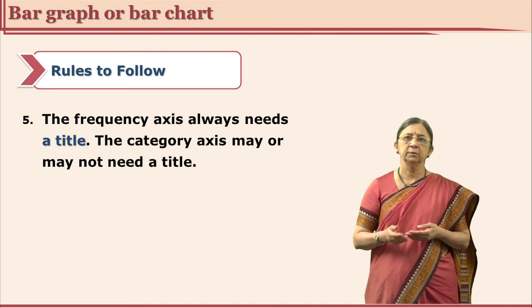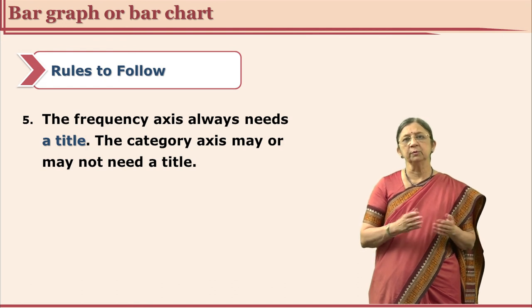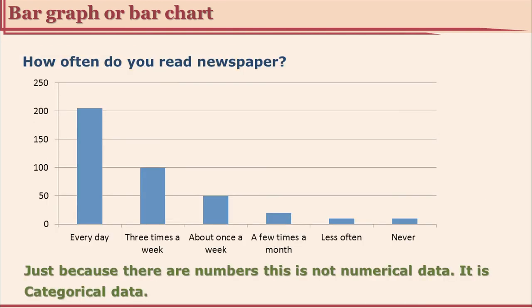Bar chart or bar graph can also be used for numerical data, and the same rules apply. We drew this bar graph for categorical data — asking how often do you read the newspaper created six categories showing frequency of reading, making it categorical data. But if you ask how many days in a week do you read the newspaper, then it is not a category — days are counted, it is continuous data, and therefore numerical data. You have to understand the difference between categorical and numerical data.